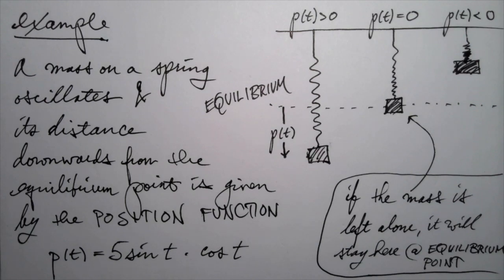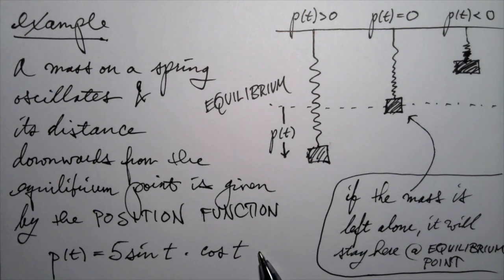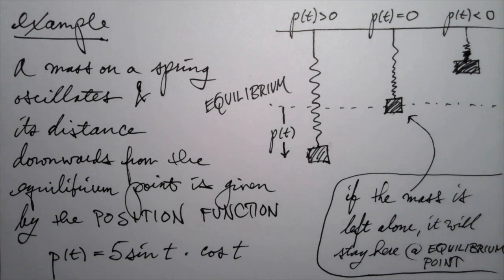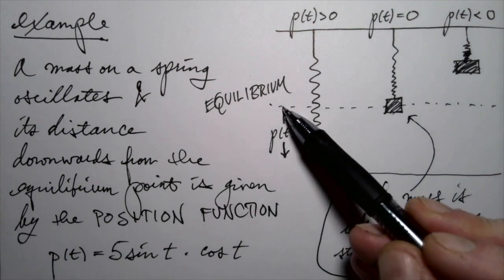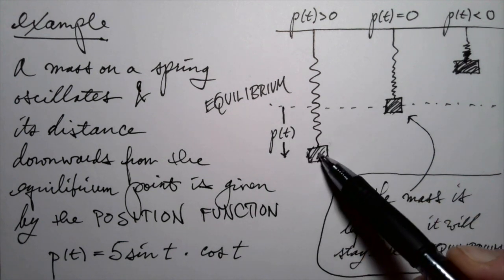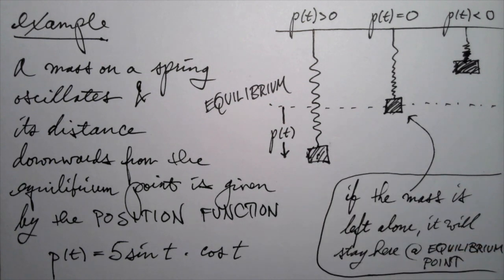Let's consider a mass on a spring that's oscillating. Its distance downwards from the equilibrium point is given by the position function p of t equals 5 sine t times cosine of t. So that's a function of time t, and its output is this vertical distance downward, telling us at that moment in time how far the mass is from the equilibrium point.